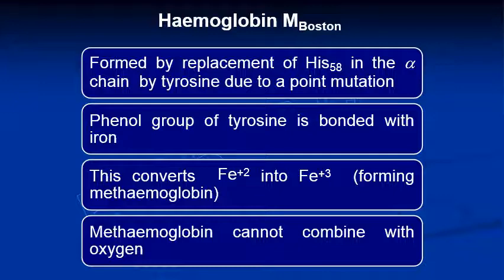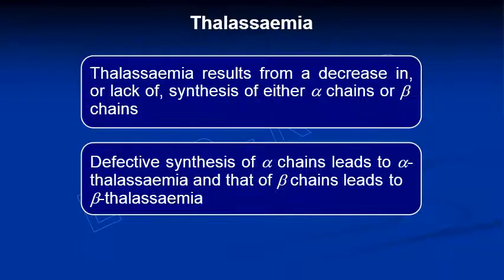Hemoglobin M, also known as Boston hemoglobin, results from a mutation where histidine 58 in the alpha chain is replaced by tyrosine. The phenol group of tyrosine binds to iron and converts the ferrous iron to ferric iron, producing methemoglobin. Since methemoglobin cannot combine with oxygen, patients with hemoglobin M may suffer from low oxygen availability.